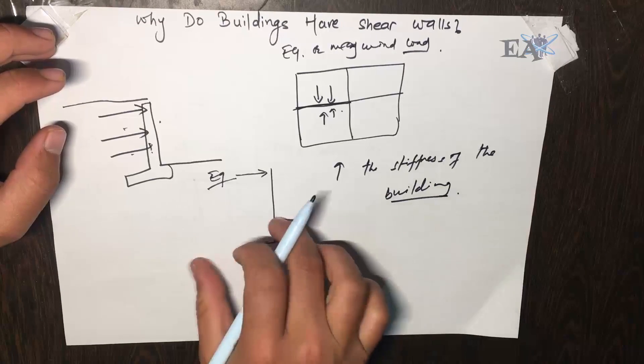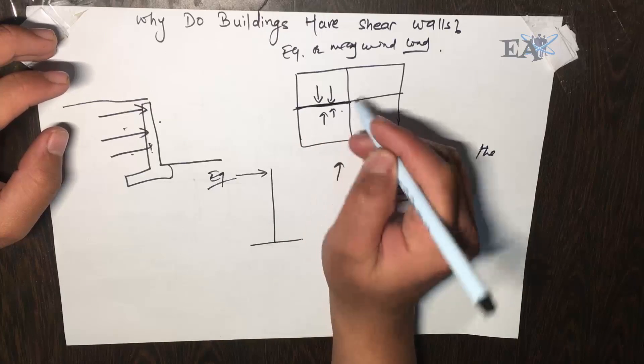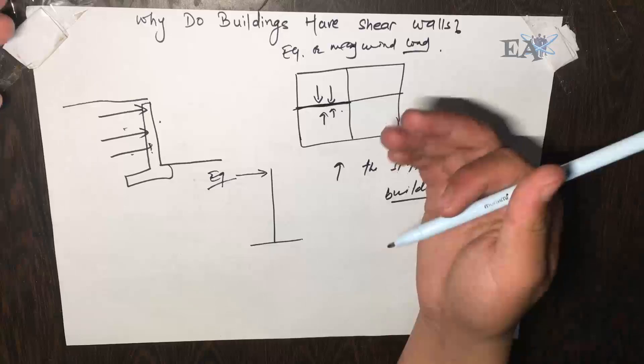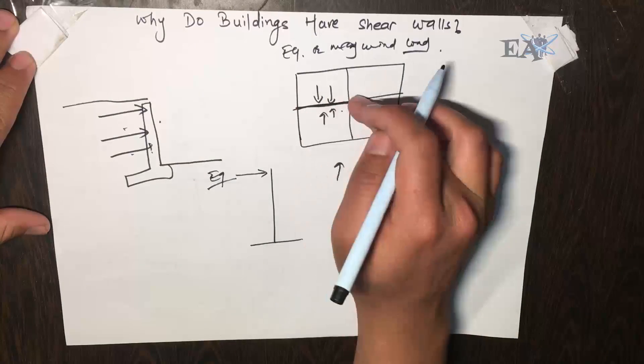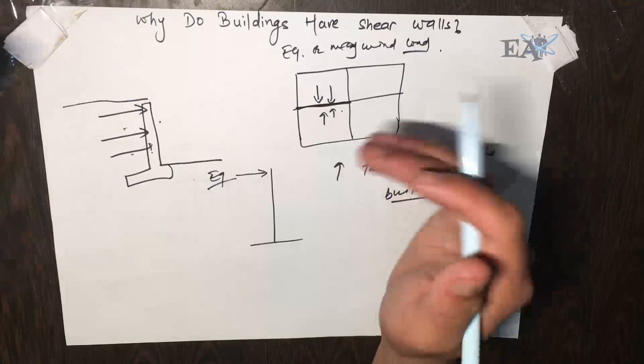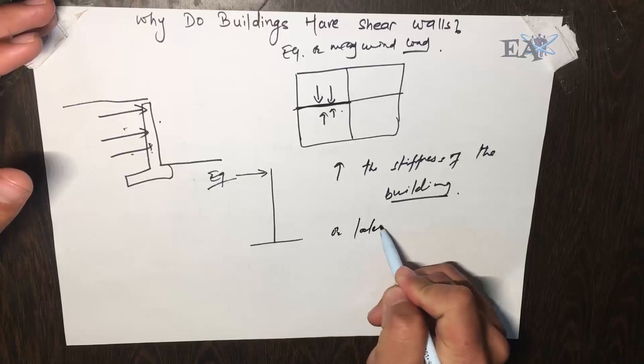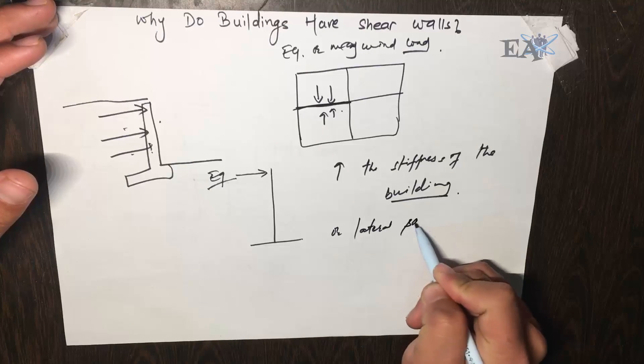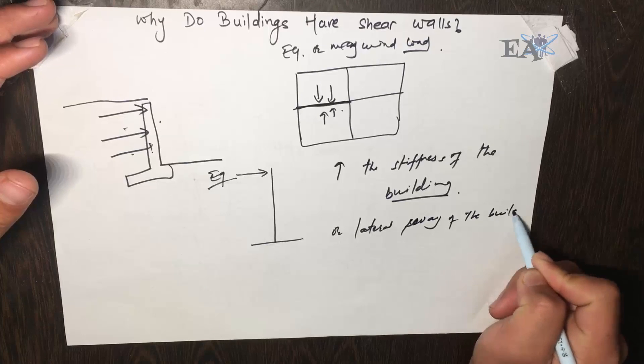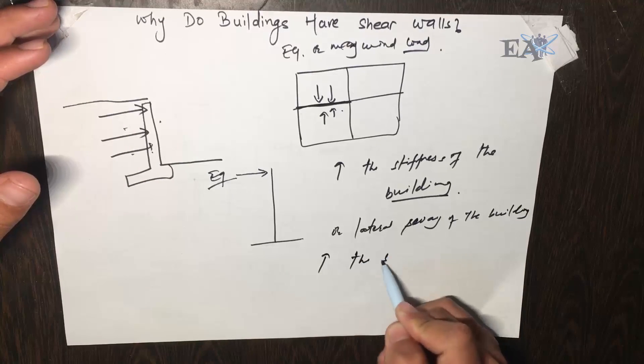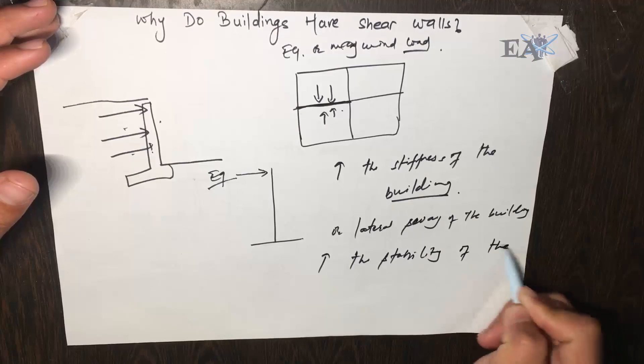In order to do that, what he does is he adds the shear wall which helps to increase the stiffness of the building. So the basic purpose of the shear wall that is inside of the building is to increase the stiffness in order to reduce the lateral displacement or lateral sway of the building and increase the stability of the building.